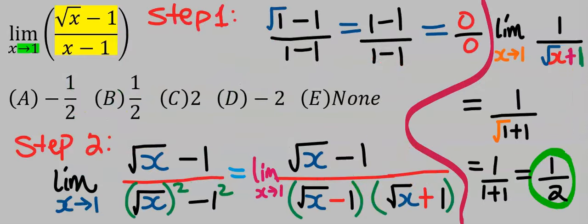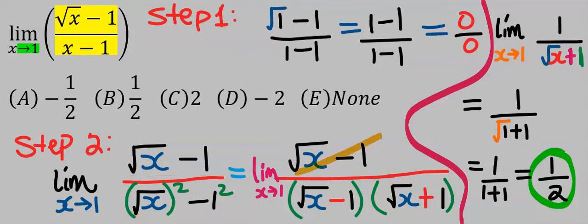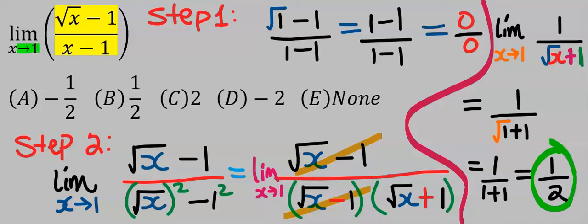With this concept we now have difference of two squares, and this can now cancel this. Taking the limit of the remaining function, your answer is 1 over 2, which is option B.